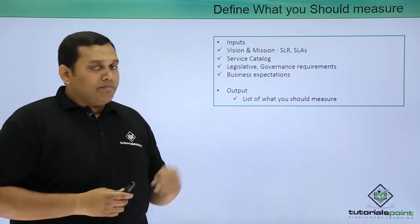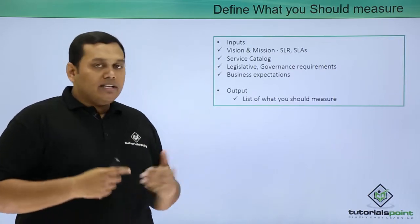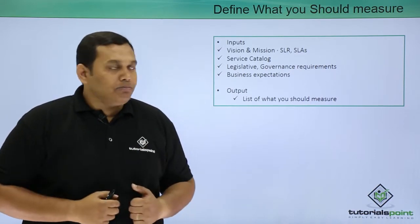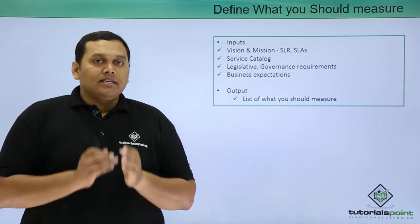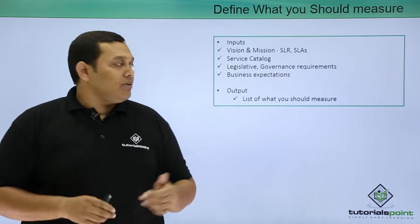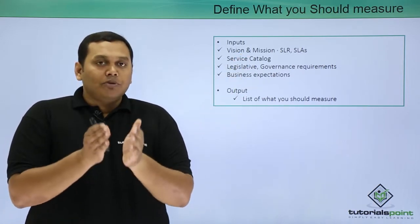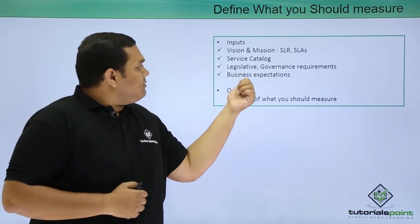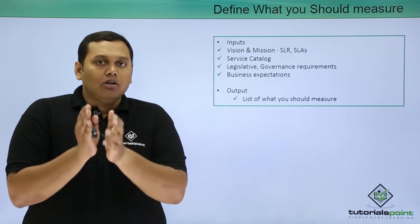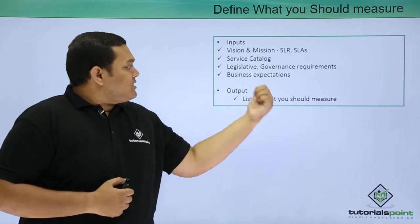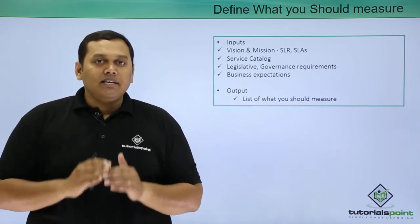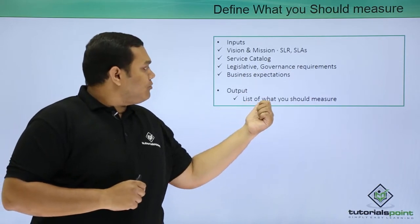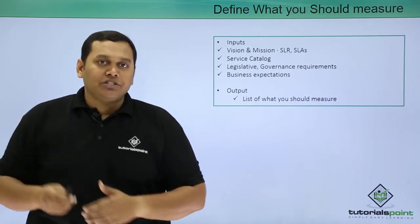The first step is define what you should measure. By following this process you can see inputs and outputs — what inputs are available and what outputs are expected. Inputs include vision and mission, such as service level requests and service level agreements, the service catalog, legislative and governance requirements with necessary permissions and accesses, and business expectations. The output is a list of what you should measure.